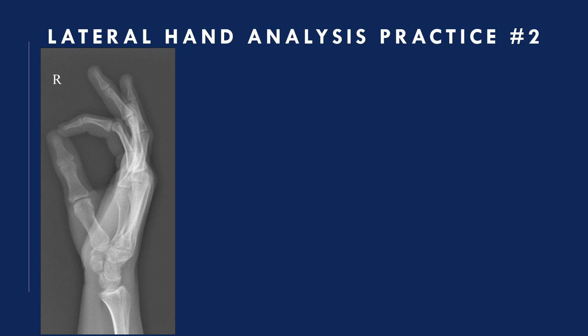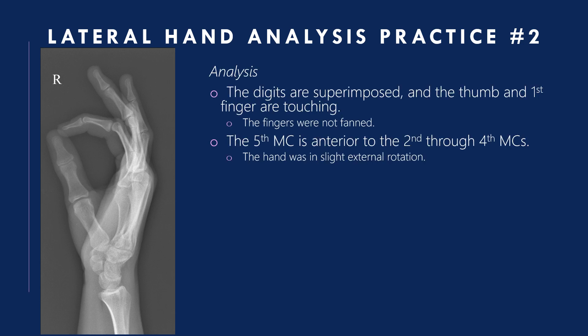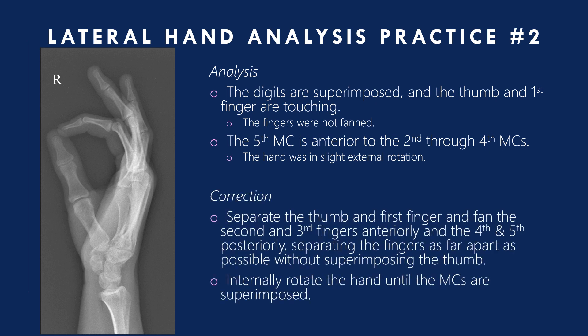Lateral hand analysis practice two: the digits are superimposed and the thumb and first finger are touching — the fingers were not fanned. The fifth metacarpal is anterior to the second through fourth and the hand was in slight external rotation. Correction: separate the thumb and first finger, fan the second and third fingers anteriorly and the fourth and fifth posteriorly, separating them as far apart as possible without superimposing the thumb. Internally rotate the hand until the metacarpals are superimposed.